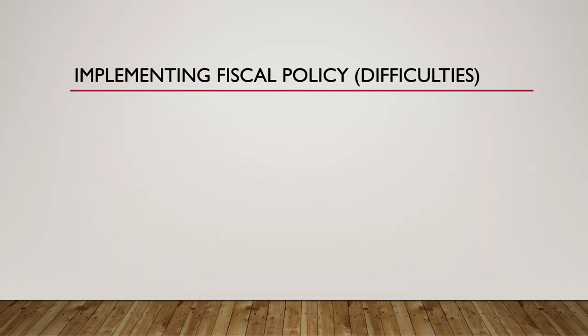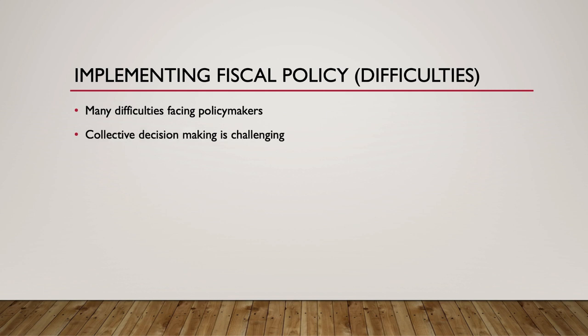The implementation of fiscal policy is far from easy, simple, and straightforward. There are many difficulties facing those who wish to implement fiscal policy, the first being the obstacle of collective decision-making. However, even if the Senate, the House, and the President were to fully agree on policy goals and strategies, and even if the general public were well-informed on the political process, there are still problems related to the timing of implementing fiscal policy.